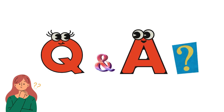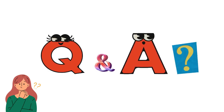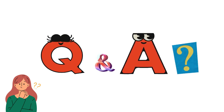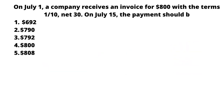In this question series by Class Theta, we will be explaining questions in detail. For today, our question is basically an MCQ skill, and I will read the MCQ in front of you so you can understand it. On July 1, a company receives an invoice of $800 with the terms 1/10 net 30.